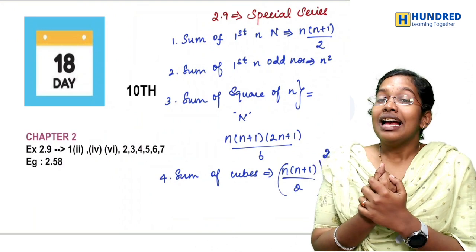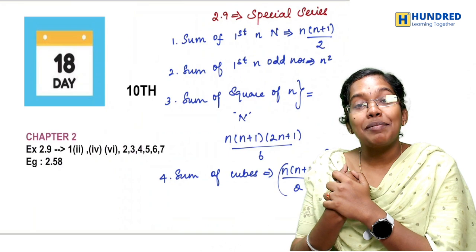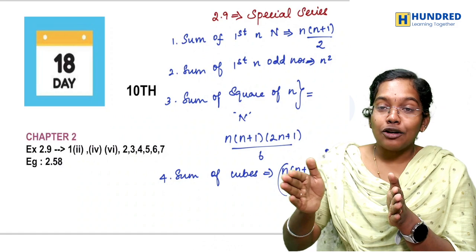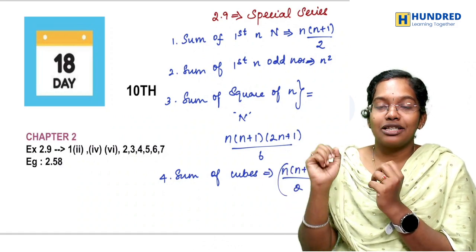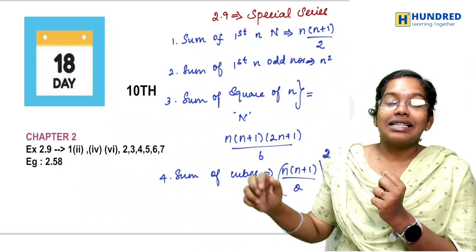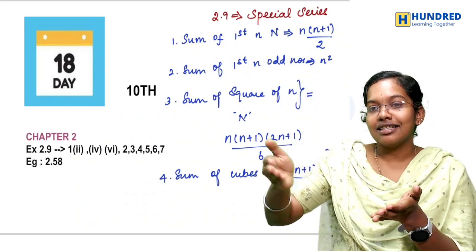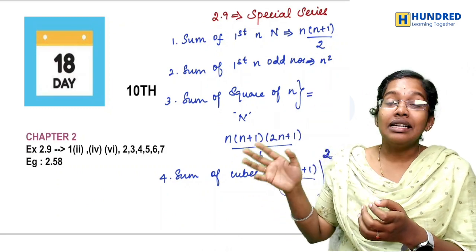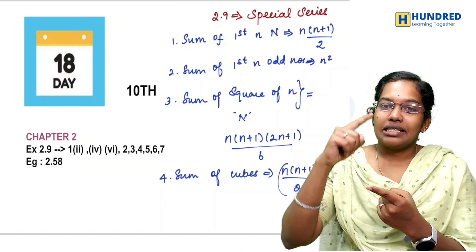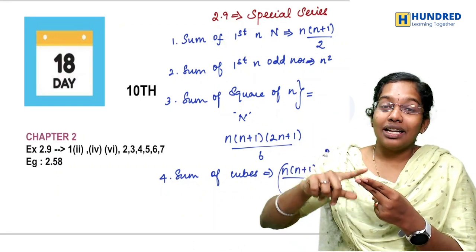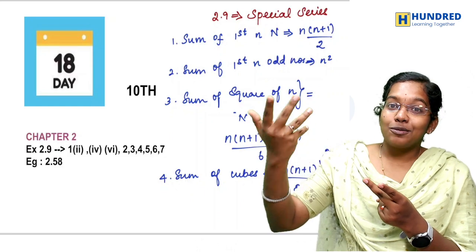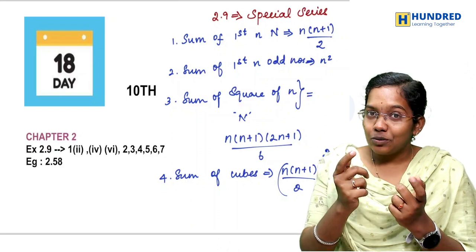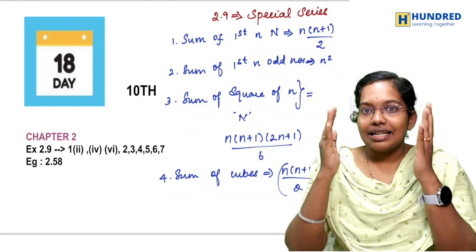For 10th standard students, Exercise 2.9 is fully focused on special series. Special series means square numbers and cube numbers — line and sequence patterns where values are defined and formulas are given. These are important for government exams and future college entrance exams, so we will cover these basic questions thoroughly.